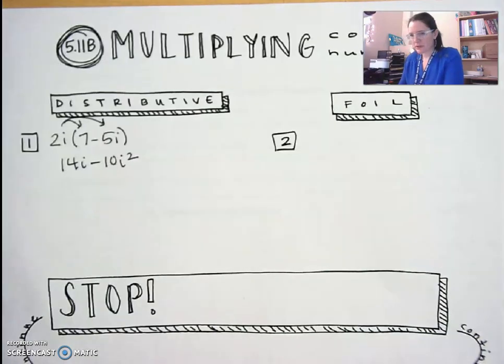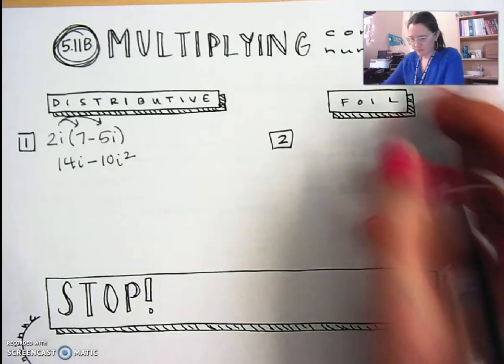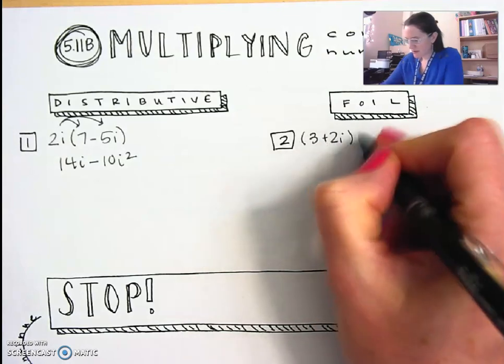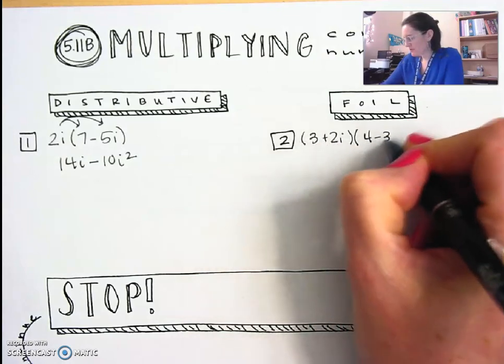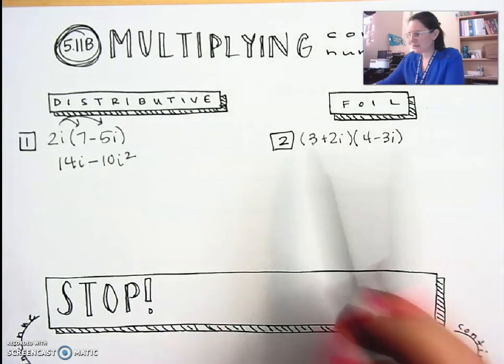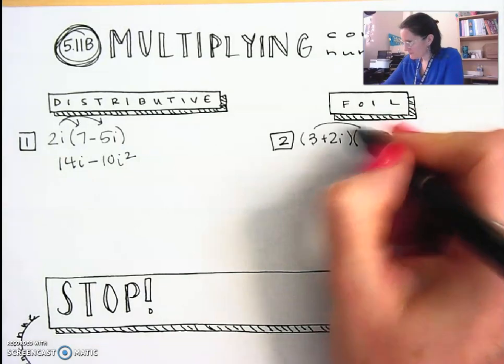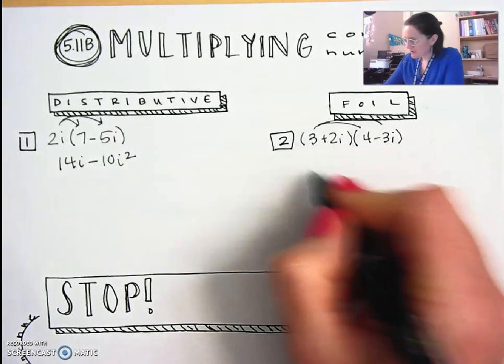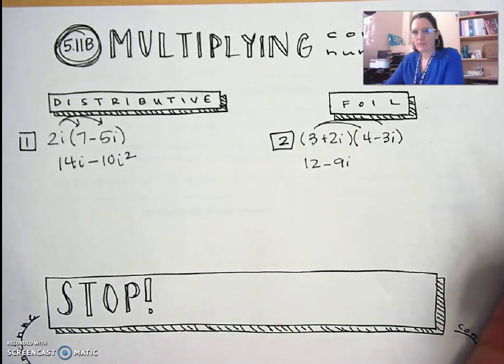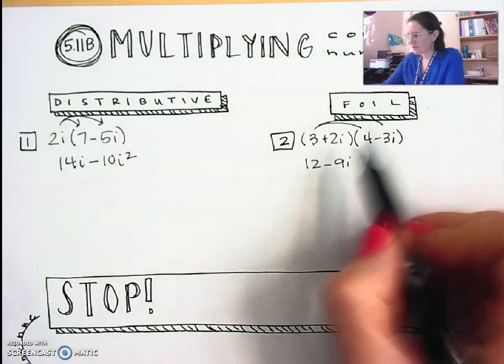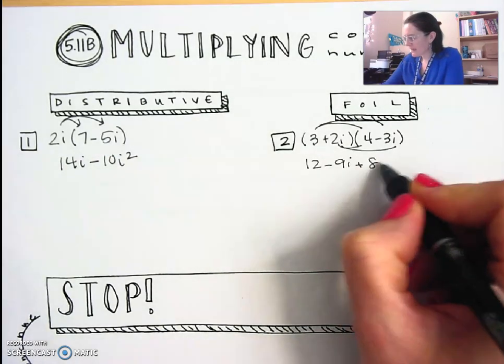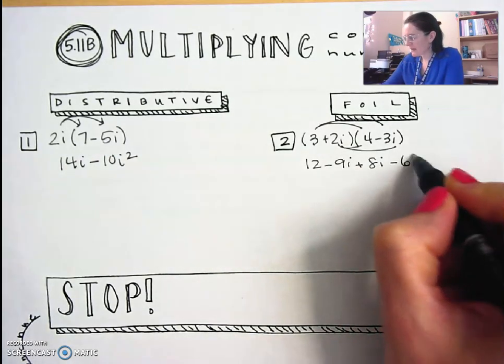If we have a double distributive problem or FOIL, let's say we have 3 plus 2i times 4 minus 3i. I'm going to take the first term, the 3, and distribute it. So that gives me 12 minus 9i. And then I'll distribute the second term, the 2i. That gives me plus 8i minus 6i squared.